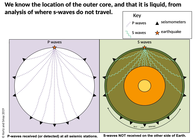The big point is that S waves tell us that material in the Earth is liquid and where it's located, and it turns out the only liquid layer is the outer core.